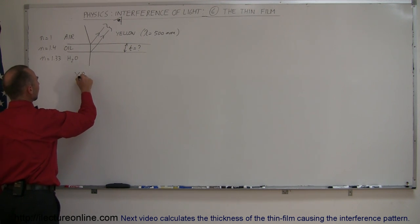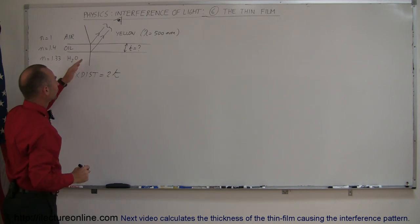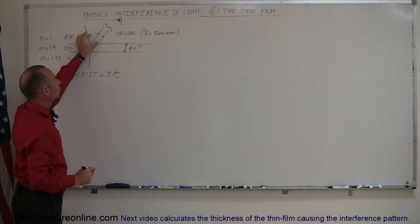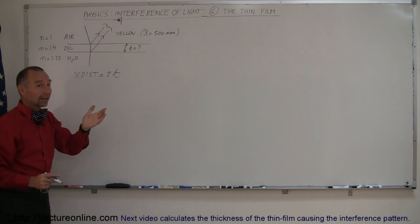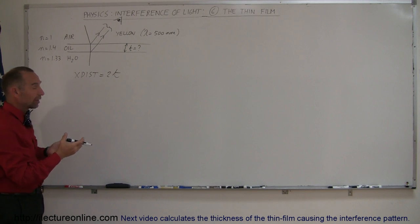So we can say that the extra distance traveled is equal to twice the thickness of the oil. And of course for yellow light to be reflected, you want the phase difference for that yellow light to be zero. In other words, you want the extra distance travel to be a full wavelength or two wavelengths or three wavelengths and so forth.